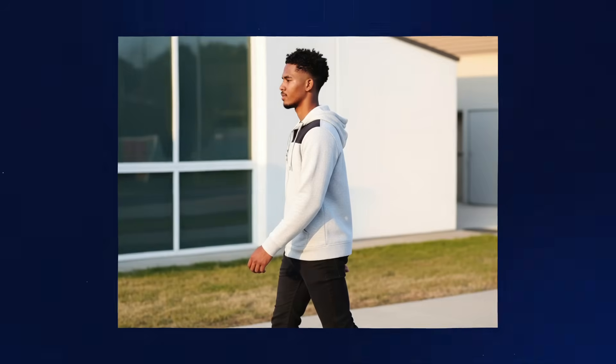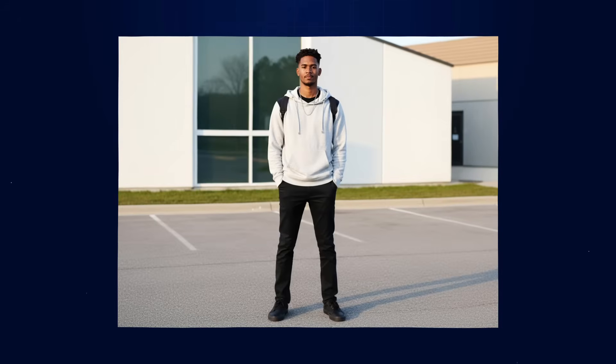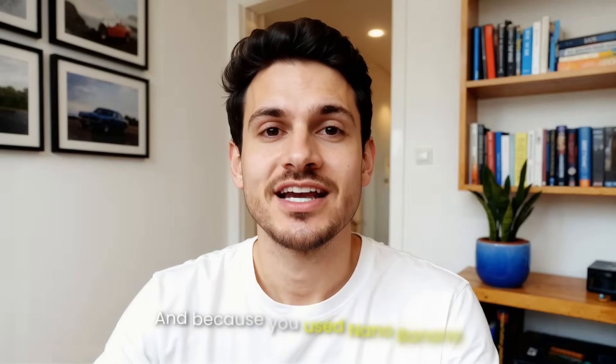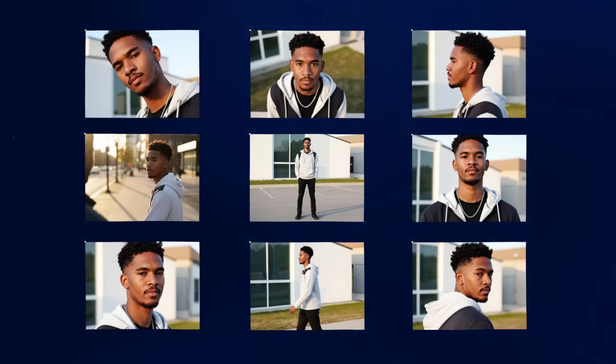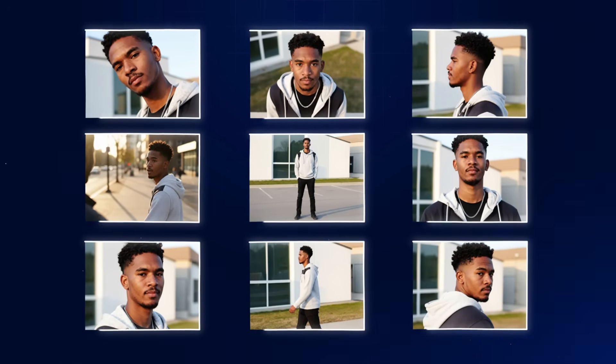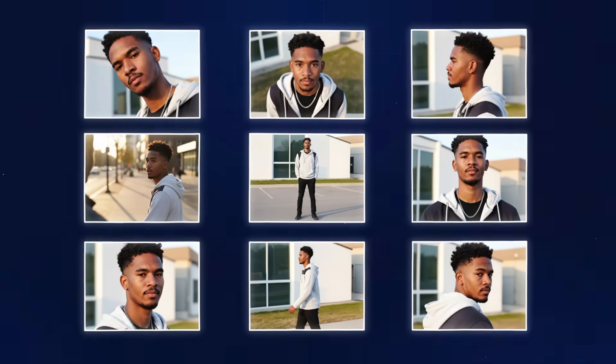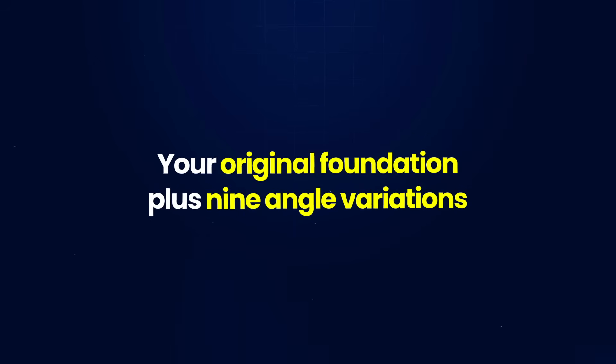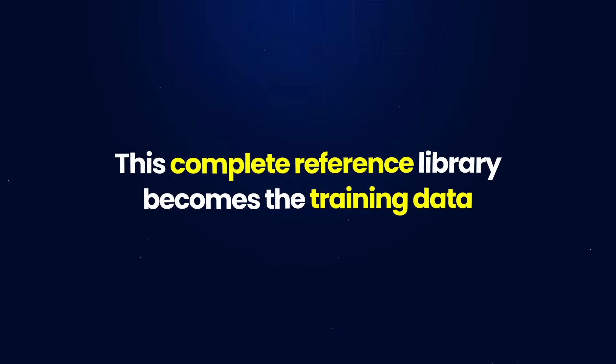What you'll end up with is a complete visual library showing your character from front, side, back, three-quarter view, sitting, standing, close-up, and full-body perspectives. Because you used Nano Banana, the facial features stay perfectly consistent across all of them. This gives you 10 total images — your original foundation plus 9 angle variations — which becomes the training data for your character's dedicated model.